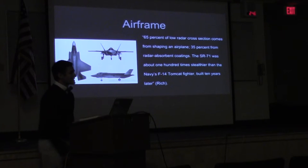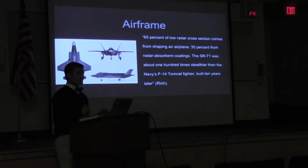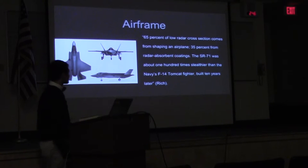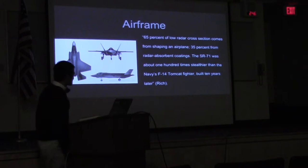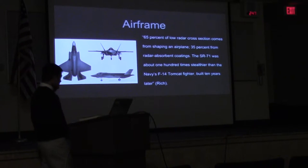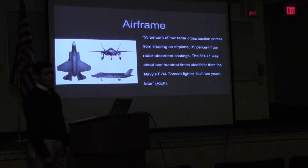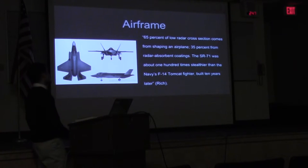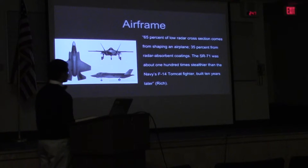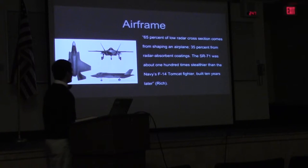As we'll see in the 1970s, radar systems were getting even better, so flying high and flying fast wasn't really going to work anymore — pretty soon we'd end up in outer space. The way to address this was through radar cross-section reduction in stealth, allowing us to fly at lower altitudes and still achieve the same goal. This is done primarily through the airframe. I want to read this quote from the book Skunk Works, written by a former director of the stealth division of Lockheed Martin: '65% of low radar cross-section comes from shaping an airplane, 35% from radar absorbent coatings. And the SR-71 was about 100 times stealthier than the Navy's F-14 Tomcat fighter, built 10 years later.' The key point: airframe is extremely important.